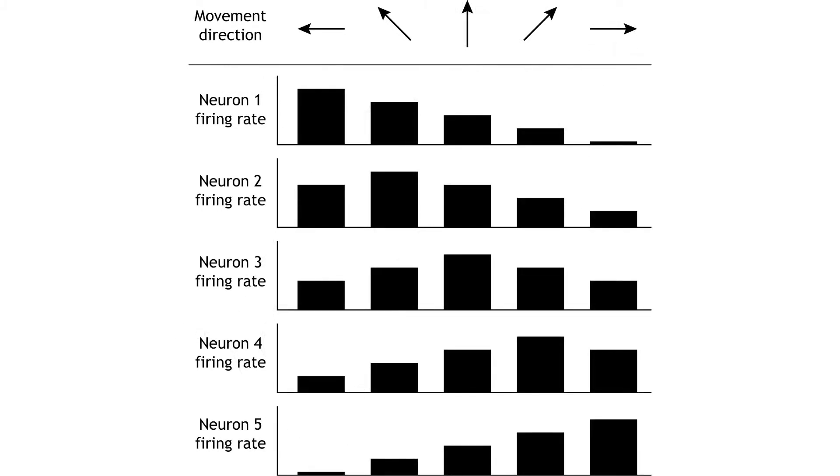The motor cortex controls movement by using population coding mechanisms. Upper motor neurons are broadly tuned to a certain movement in a certain direction, meaning firing rate is highest when moving in one direction, but firing also occurs when moving in nearby directions.